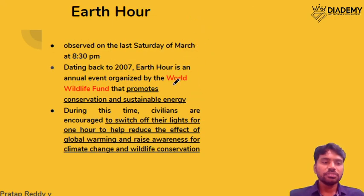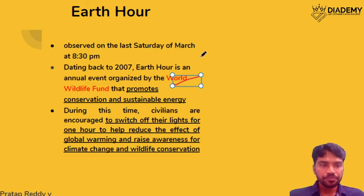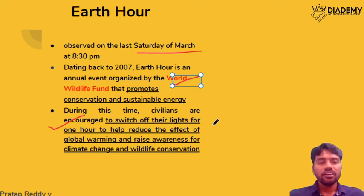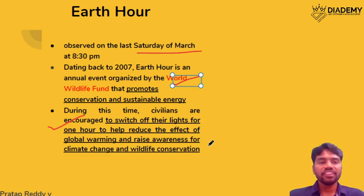Earth Hour was initiated by the World Wildlife Fund in 2007. It is observed on the last Saturday of March, during which civilians switch off their lights, fans, and other energy-based appliances for one hour. This creates awareness among citizens towards conservation of wildlife and addressing climate change.